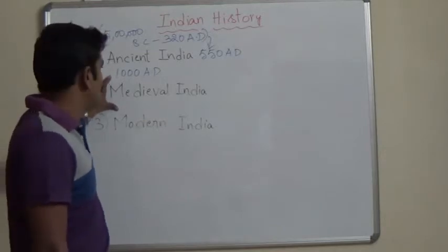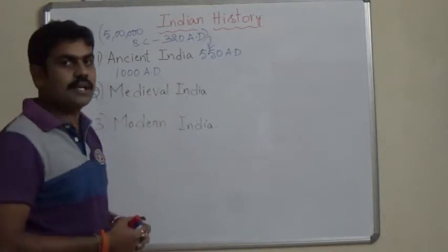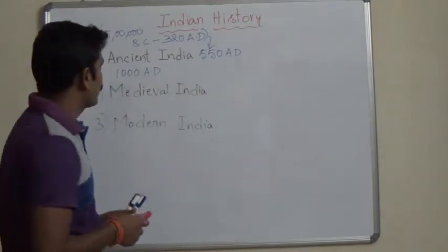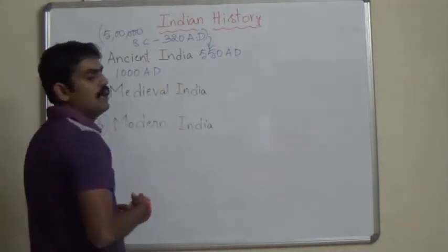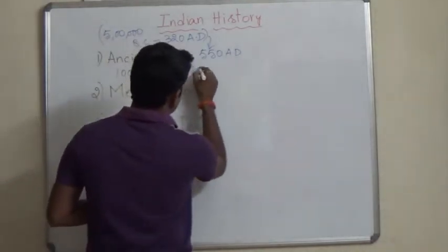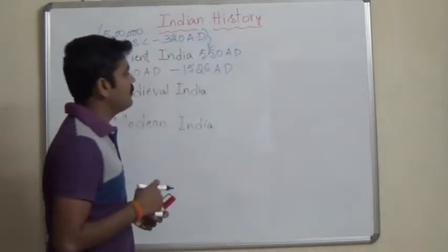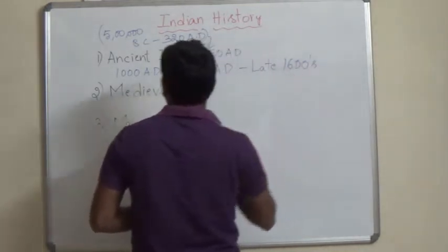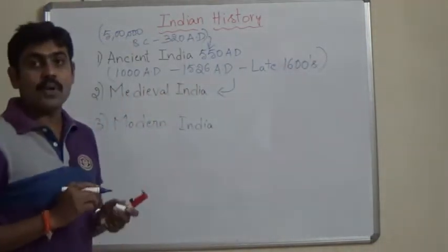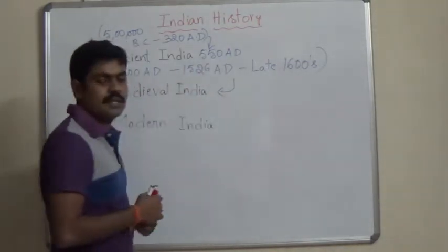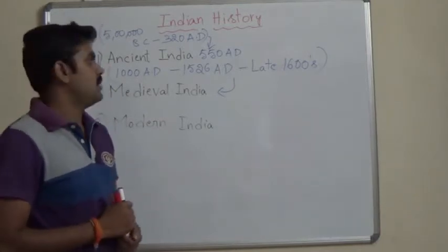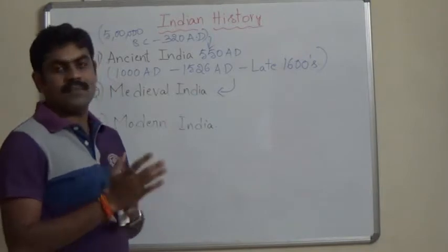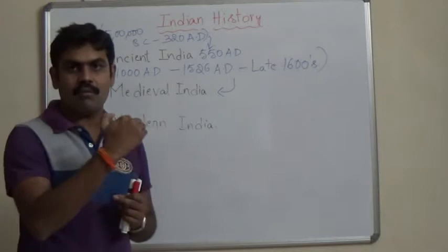From 1080 AD onwards, the Muslim invasion showed a very drastic impact on the history and culture of India — almost a new culture and a new story began for India. From this period onwards, we see the Delhi Sultanate, and after the Delhi Sultanate, the Mughal Empire started. Up to Aurangzeb, we call them the early Mughals. From the death of Aurangzeb — from Bahadur Shah I onwards — we call them the later Mughals.